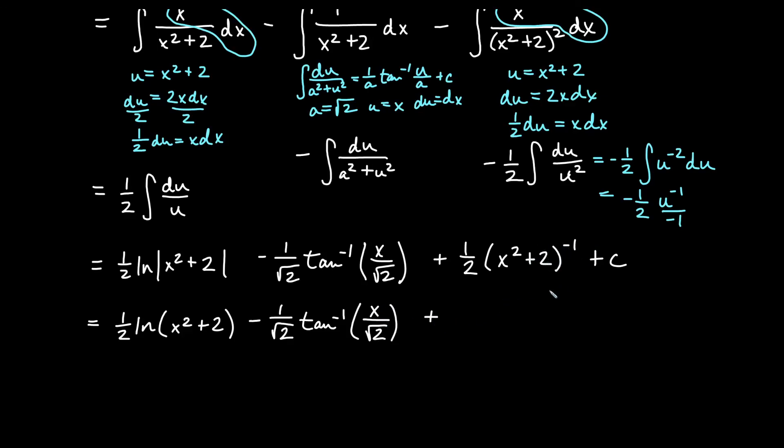Arctan(x/√2)—you could rationalize that as well. Since this is to the -1 it's really in the bottom of the fraction. We'll say + 1/(2(x² + 2)). You could distribute the 2 if you like. I'm going to leave it the way it is I think.